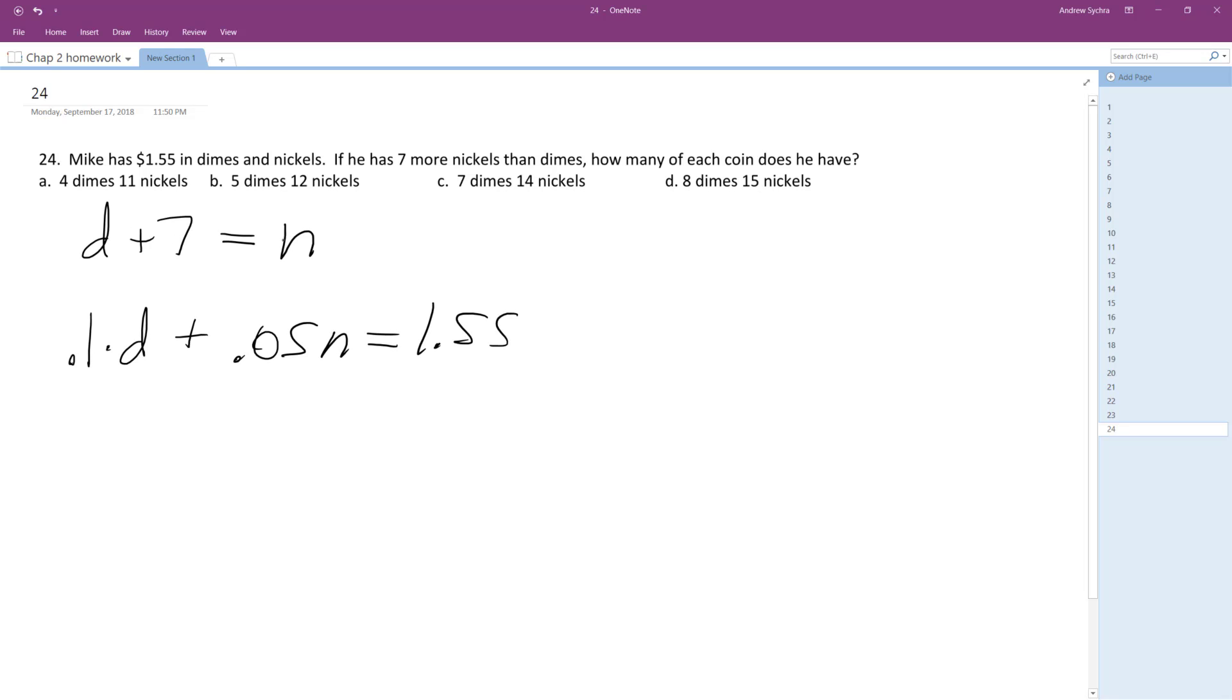So we can just sub the d plus seven in for n. So we have 0.1d plus 0.05 times d plus seven equals $1.55.